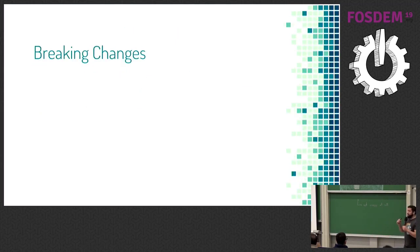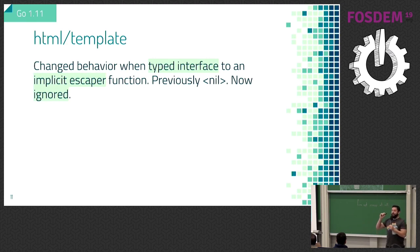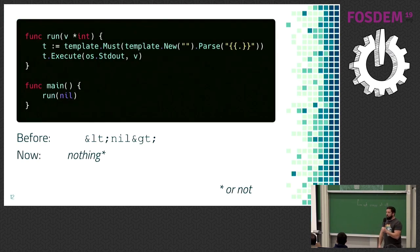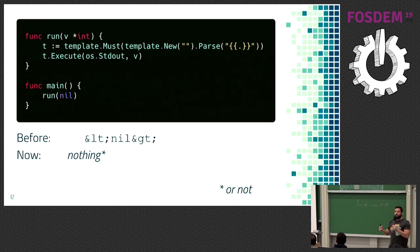In the standard library, we have two breaking changes — the important ones that might break your code. The first one: when passing a typed interface to an implicit escaper in the HTML template package, instead of getting an escaped version of nil, you will get nothing. In code, if you pass a pointer to an integer to a template, before it was printing that escaped version of nil. Now it will not print anything — except that in all of my tests it still prints it, and Brad Fitzpatrick said he doesn't know either.